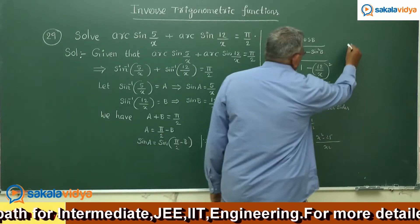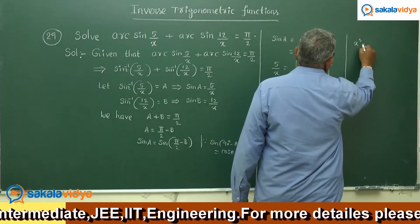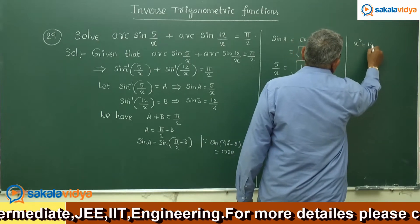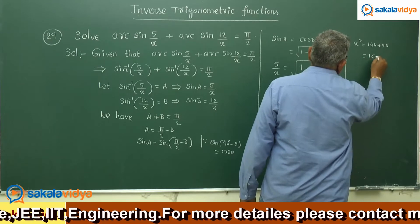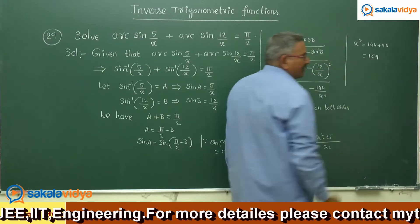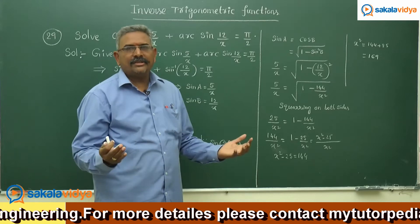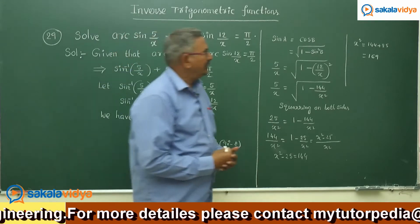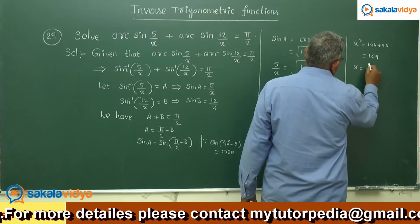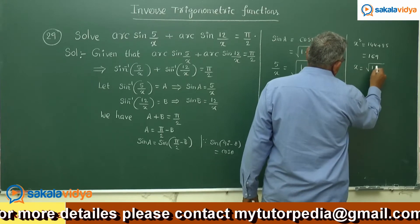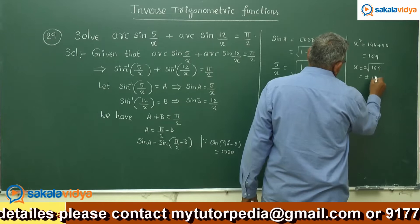So x² equals 144 plus 25, which is 169. And 169 is a perfect square — it is 13². So x equals √169, giving plus or minus 13.